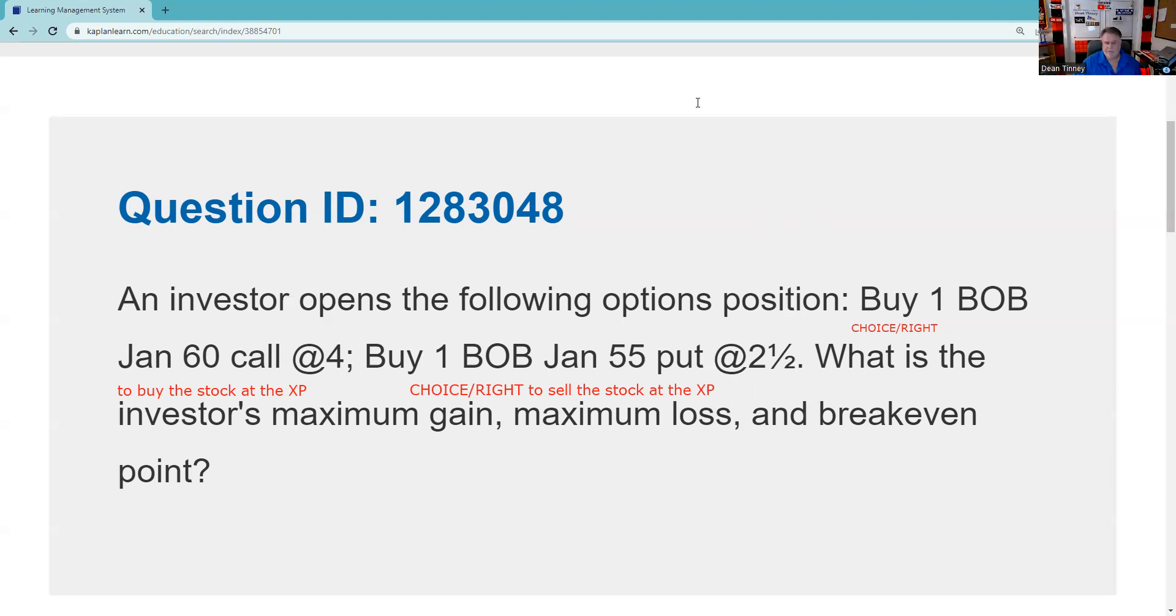What is the investor's maximum gain? Let me make my T there to track my money in and out. I like to use dollars out, dollars in. Some people like to use pluses or minuses. So I'm out four points for that call and I'm out two and a half points for that put. So ultimately, I'm out of pocket six and a half.